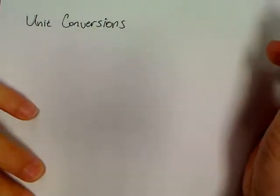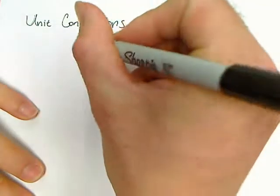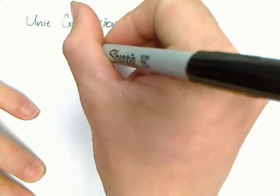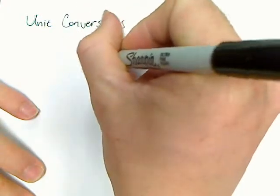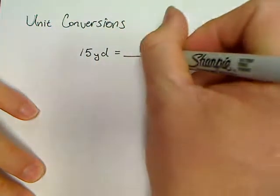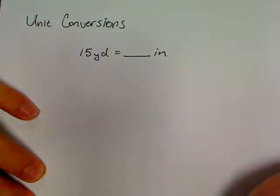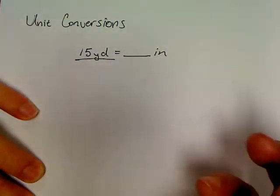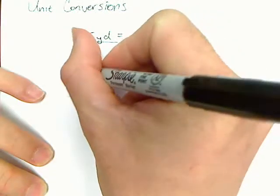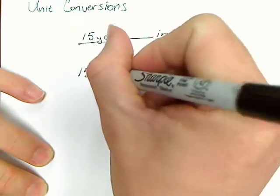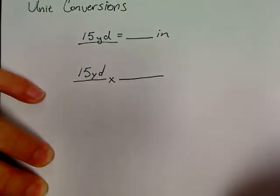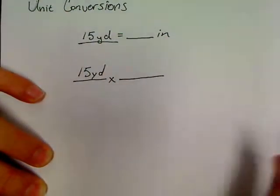We might look at something really easy, like saying 15 yards is equal to how many inches? If you're not real familiar with conversions, all you have to do is take what you've been given and write that down. So, 15 yards — draw a line, put an X, draw a line. That's where we're going to start.